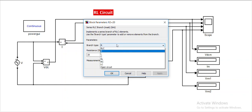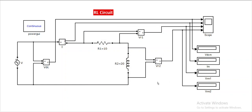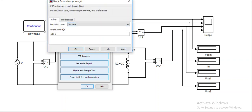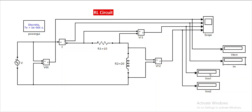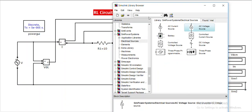I have connected the AC source and it is connected to one resistor. The other component is an inductor. Since an AC source is involved, instead of continuous we need to select discrete so that the other equipment will work properly. Before the display, I need to connect an RMS block, because the display shows instantaneous values but for AC we need RMS values.